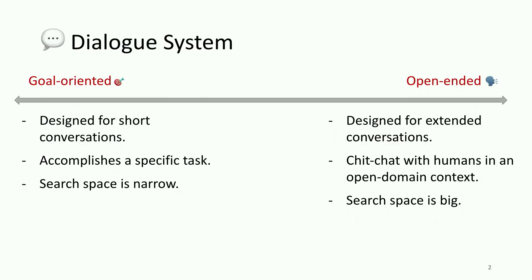Over the past decades, dialogue systems have exploded in popularity and have become omnipresent in our daily life, assisting our daily routines and schedules. Dialogue systems can basically be grouped into two classes: the first class is what we call goal-oriented dialogue systems, and the second class is what we call open-ended dialogue systems, also known as chit-chat dialogue systems.